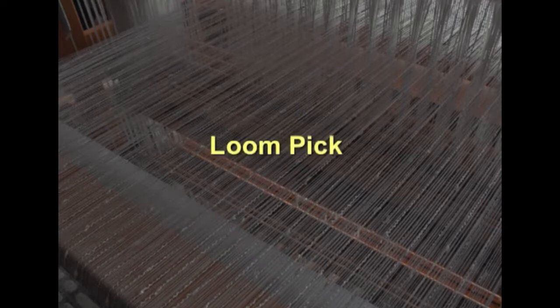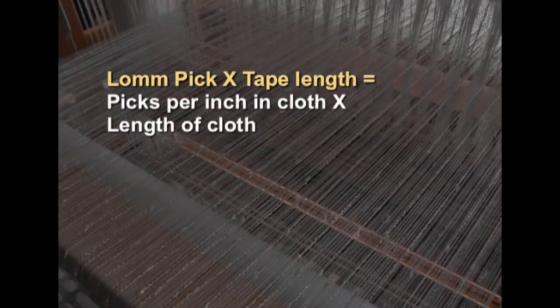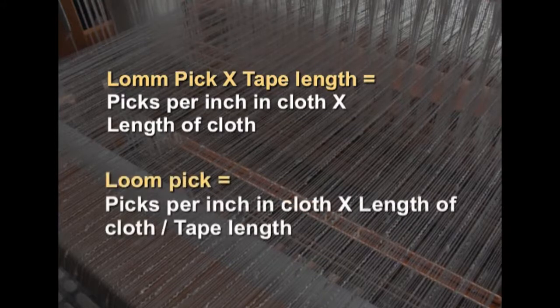Coming to loom pick: owing to the contraction of warp during weaving, picks per inch in the cloth are higher than the picks inserted per inch of the warp on the loom. To find the number of picks to be inserted per inch of warp on the loom: loom pick × tape length = picks per inch in cloth × length of cloth. Therefore, loom pick = picks per inch in cloth × length of cloth / tape length.